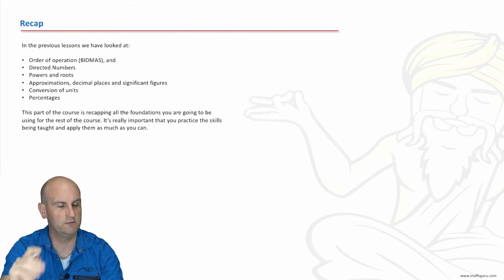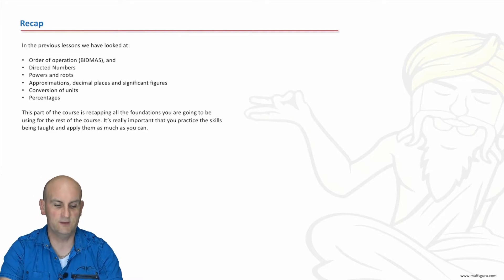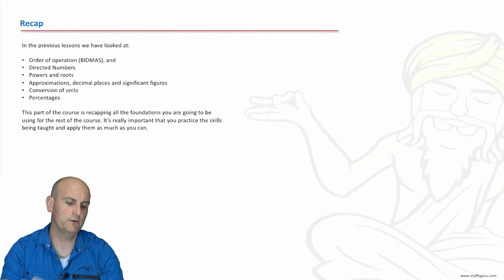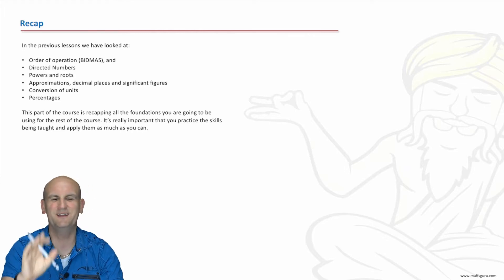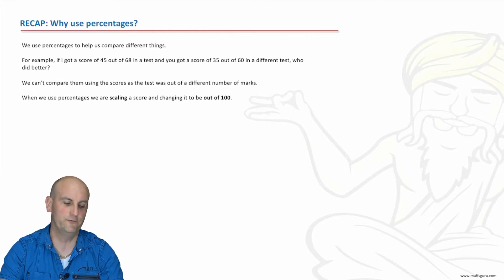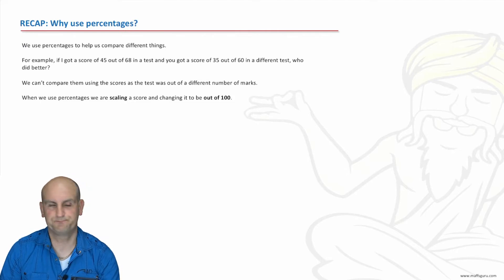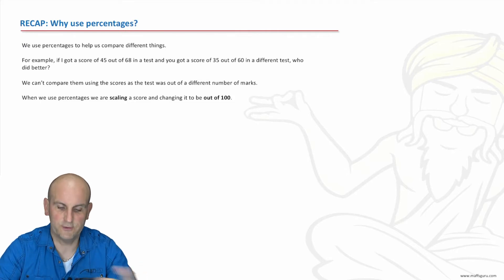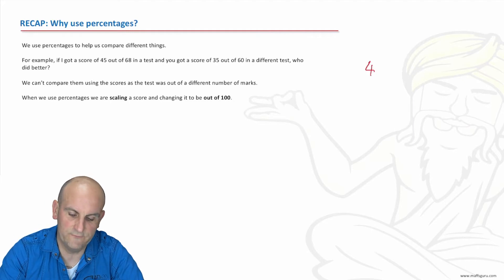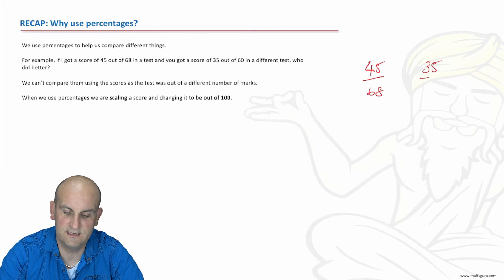Don't just take my word for it — write your own notes as well if needs be. We've already done orders of operation and directed numbers and powers and routes and all these types of things before. But why do we use percentages? Well, if I got a test score of 45 out of 68, and you got a score of 35 out of 60, who did better?